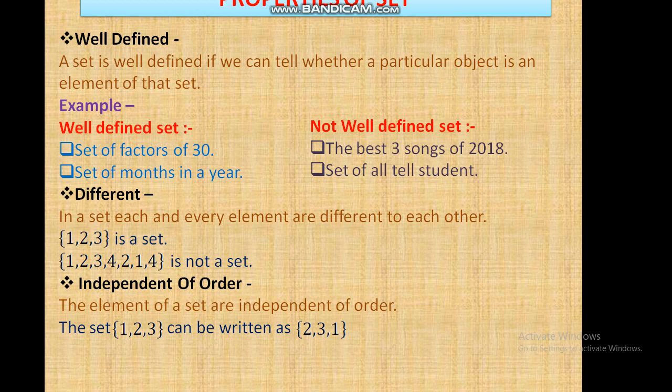Different – In a set, each and every element are different from each other. {1,2,3} is a set. {1,2,3,4,2,1,4} is not a set because there is repetition of 2 and 4. Independent of order – The elements of a set are independent of order. The set {1,2,3} can be written as {2,3,1}.